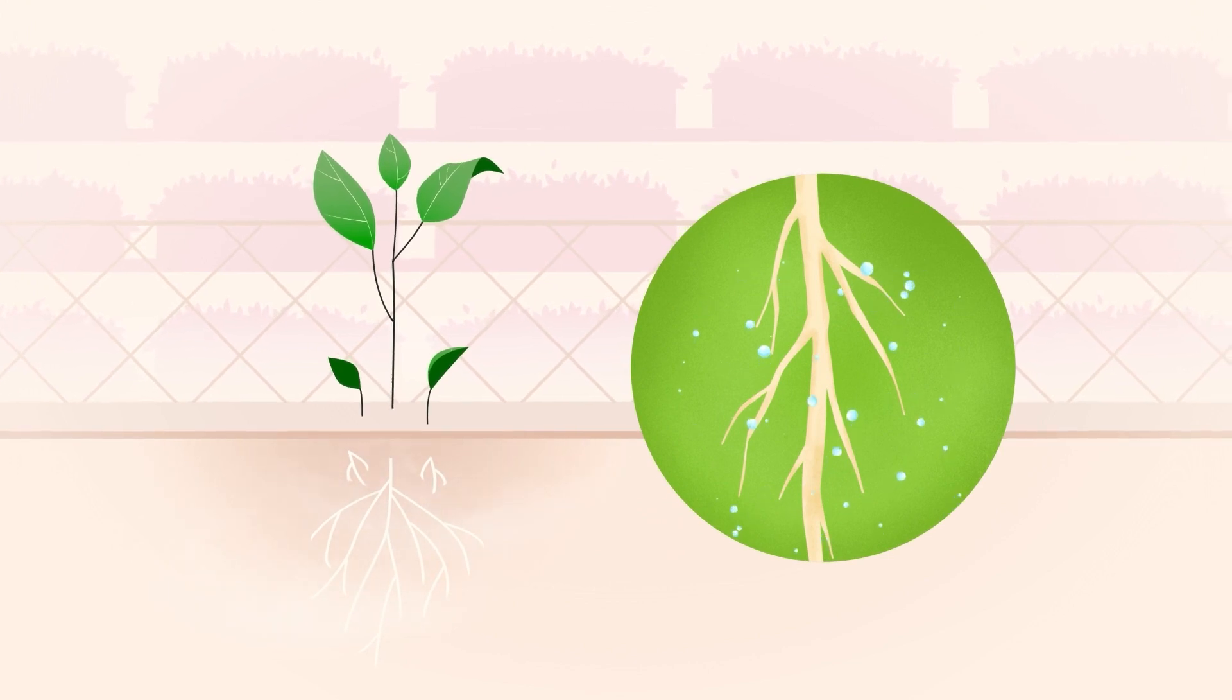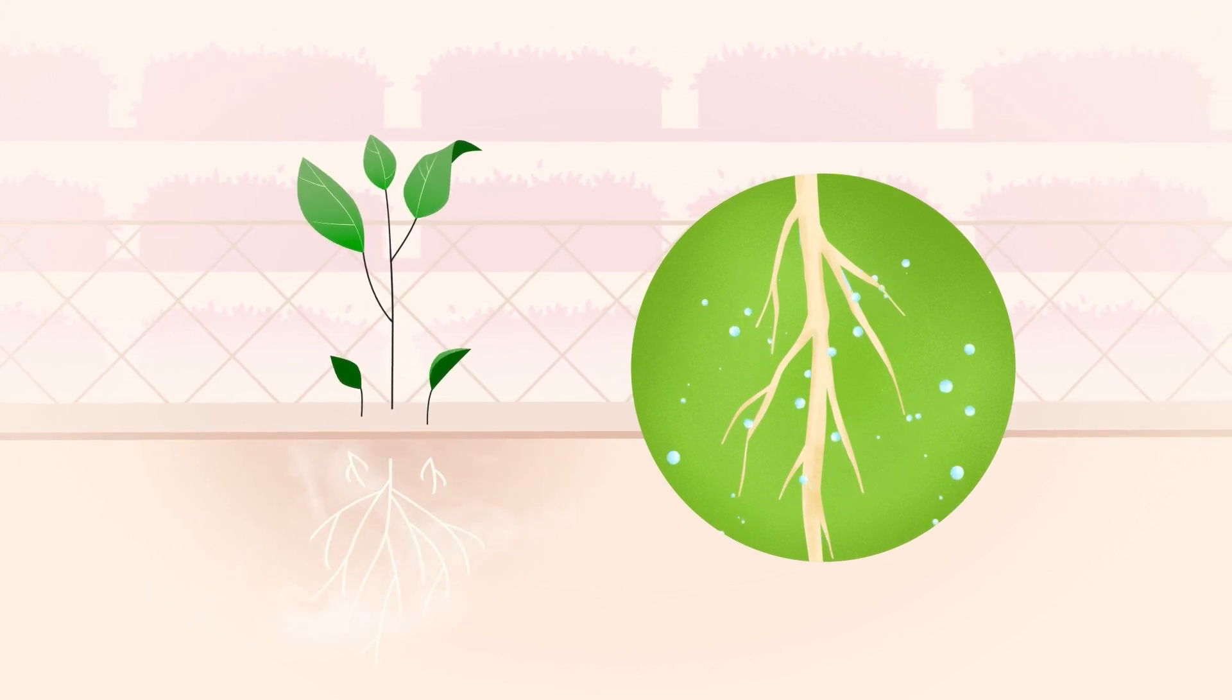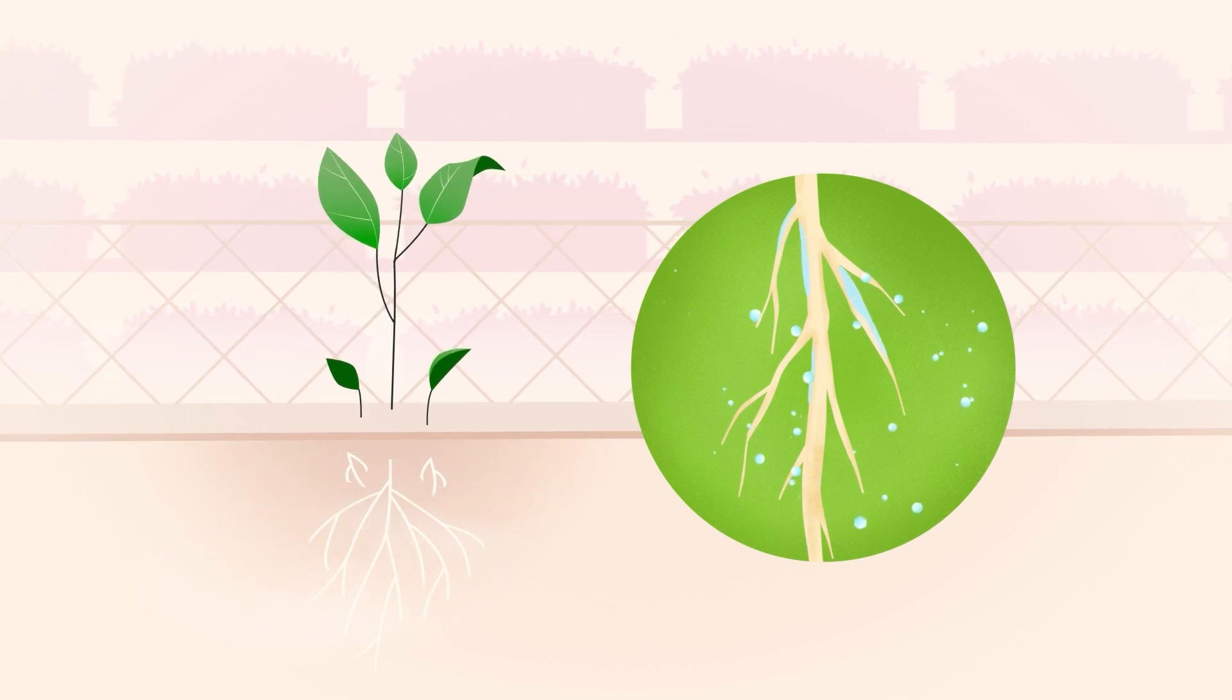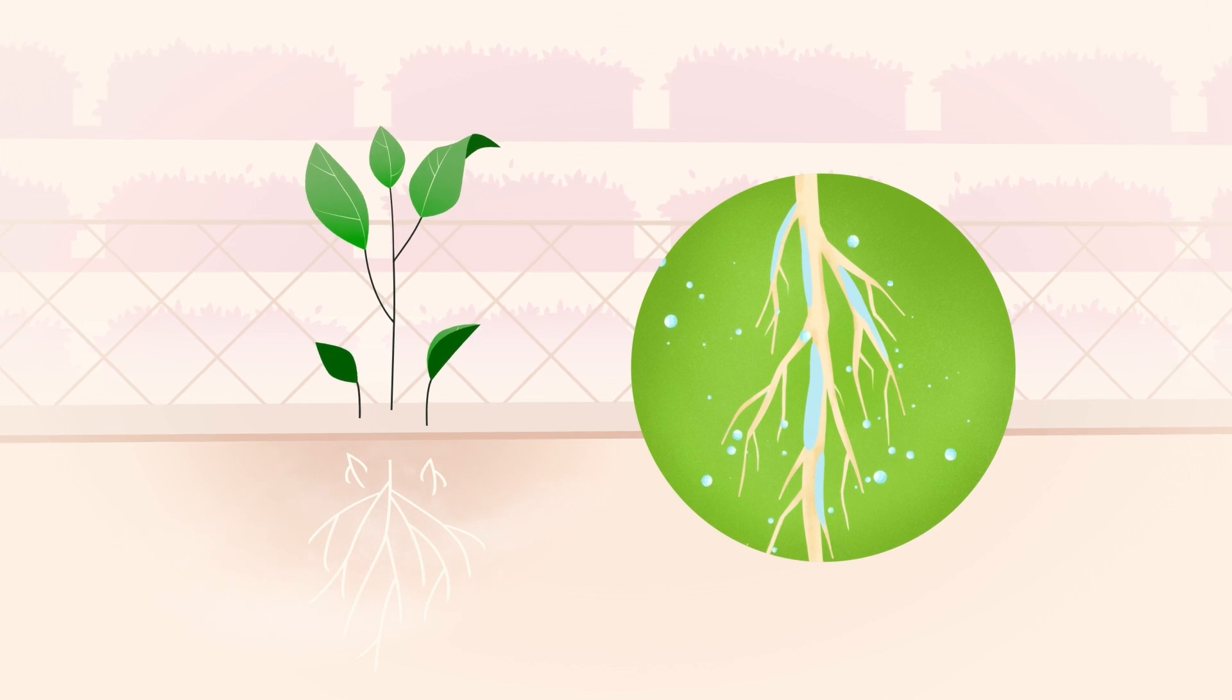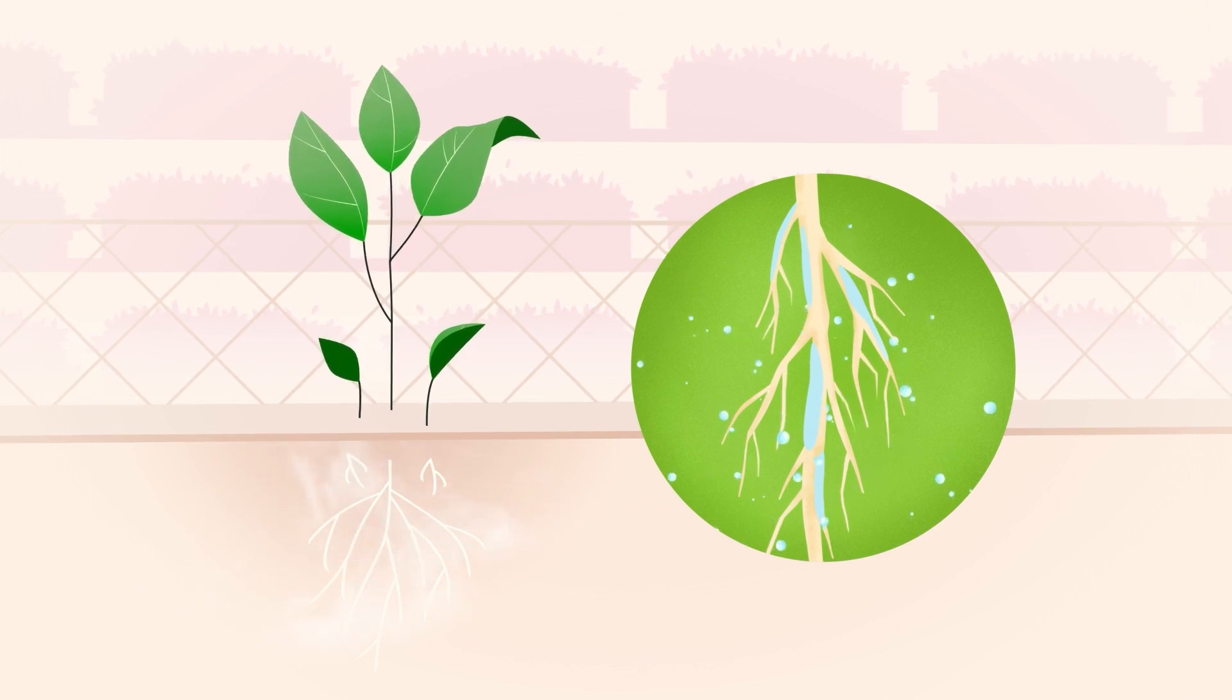This delivers all the nutrients and water the plant needs, while providing access to important atmospheric gases such as oxygen, which lets the roots breathe. This makes roots healthier and stronger, which helps plants grow faster than in other indoor farming methods.